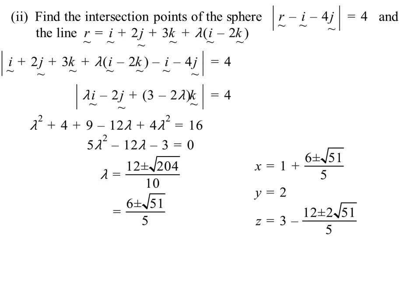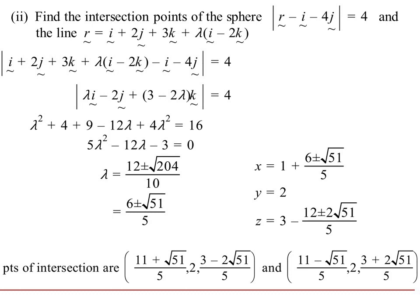Subbing back in then to the different components, x is 1 + (6 ± √51)/5. y is just a constant 2. There was no lambda in the j component. z is 3 - 2 lots of that, so minus 12 ± 2. Therefore, the two points of intersection will be ((11 + √51)/5, 2, 3 - (12 - 2√51)/5), probably easier to think of 3 as 15/5. So, 15 - 12 is 3, and then we'll have, well, it's minus the fraction, so the plus becomes a minus 2√51, and then the other one becomes a plus 2√51/5. We've got our points of intersection.